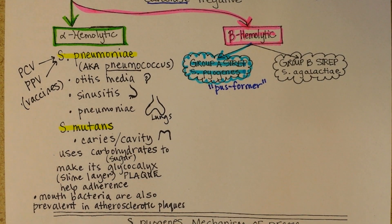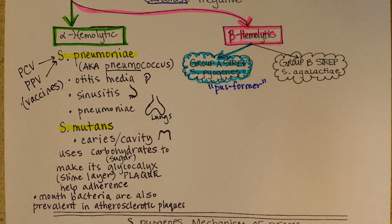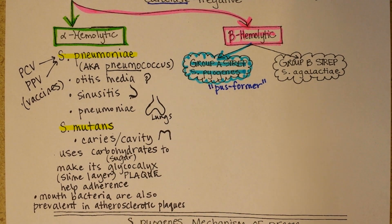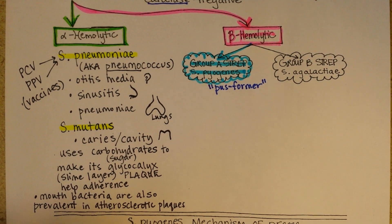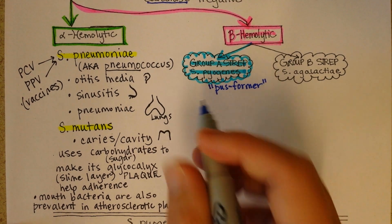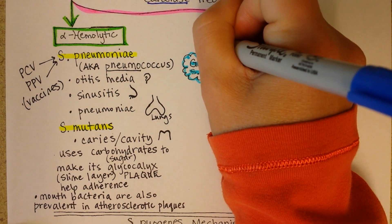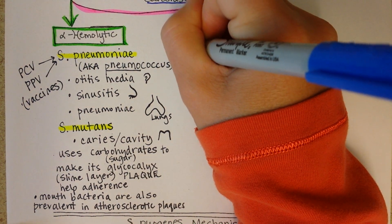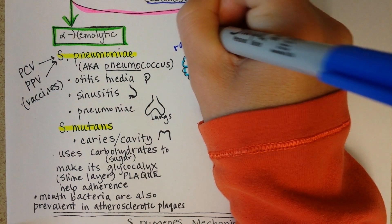Because if you've ever seen strep throat at the back of someone's throat, you can see little pus piles forming where the bacteria is growing, and that gives you an indication of just why it's such a painful infection as well. We have something called a rapid strep test that can be performed for this.